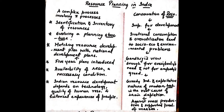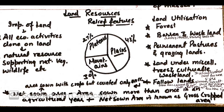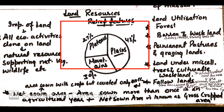Moving on to the next topic, that is land resources — the most important resource where all economic activities are done. This is a natural resource supporting natural vegetation, wildlife, etc. On the land we find 27% land under plateaus, 43% land under plains, and 30% land under mountains.